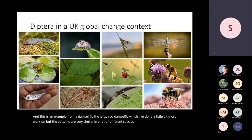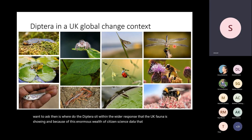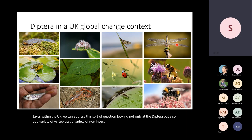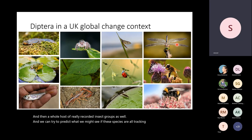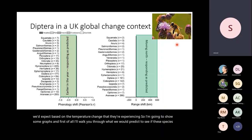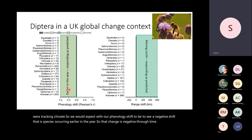The first question I want to ask is: where do the Diptera sit within the wider response that the UK fauna are showing? Because of the enormous wealth of citizen science data we have for different taxa, we can address this looking not only at the Diptera but also at vertebrates, non-insect invertebrates, and well-recorded insect groups. We can try to predict what we might see if these species are all tracking climate change, and we'd expect a negative phenological shift — species occurring earlier in the year.